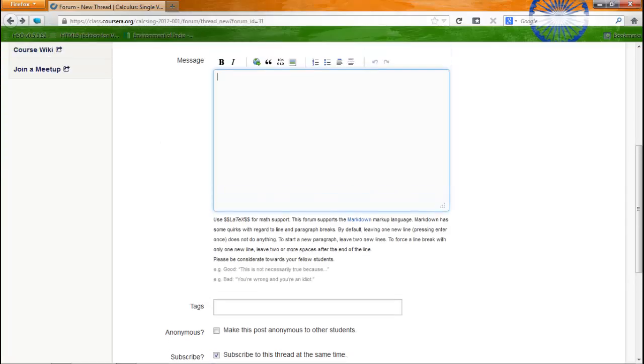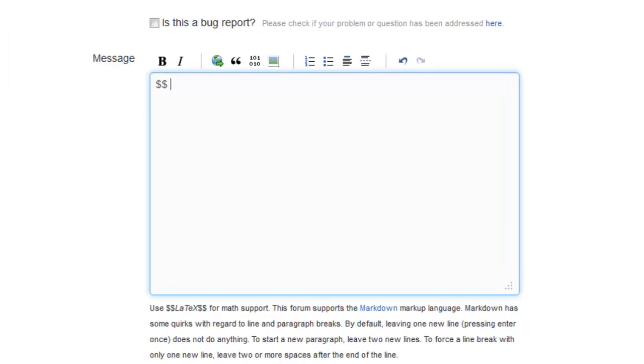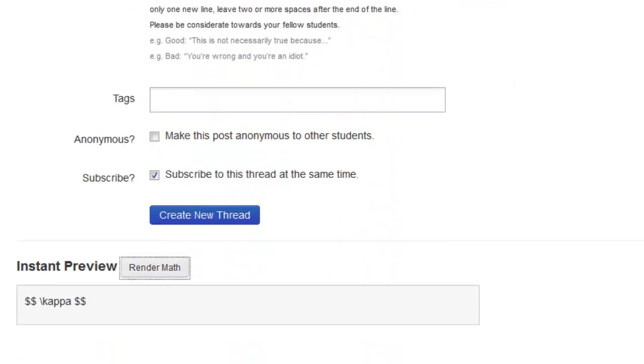To tell the system that you're going to type math, type the dollar symbol twice. Now whatever you write after that will be rendered as math. Remember to end your math with the dollar symbol twice. Suppose I want to write the Greek letter Kappa. Type the dollar symbol twice, then type the backward slash, type Kappa and end it with dollar symbol twice once again. Click on the render math and Coursera engine provides you with the instant preview.